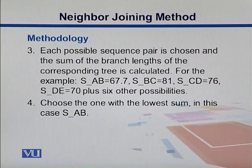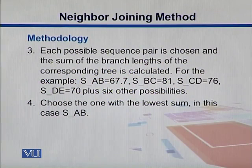Then we choose the one with the lowest sum. In this case, we have SAB, which is the lowest, and we can use this one to start with the first pair of neighbors.